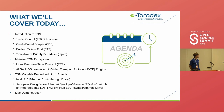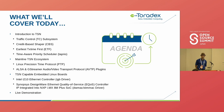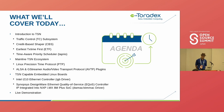What are we talking about today? I'm going to introduce TSN, then look at the traffic control TC subsystem, the credit-based shaper CBS, earliest transmit time first ETF, and the time-aware priority scheduler Taprio. We'll look at the Mainline TSN ecosystem with Linux Precision Time Protocol PTP and the ALSA and GStreamer Audio-Video Transport Protocol AVTP plugins. I'll also show some TSN-capable embedded Linux boards.